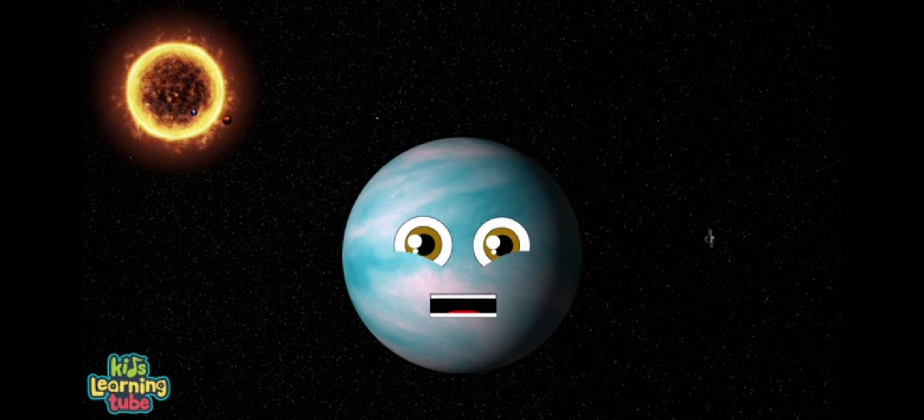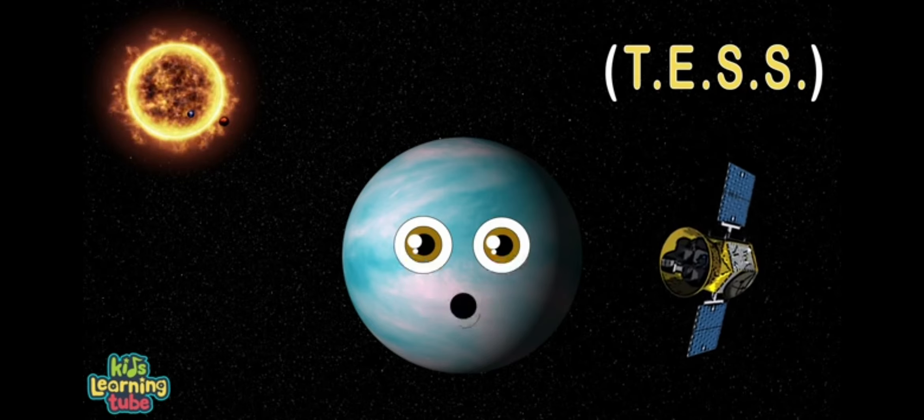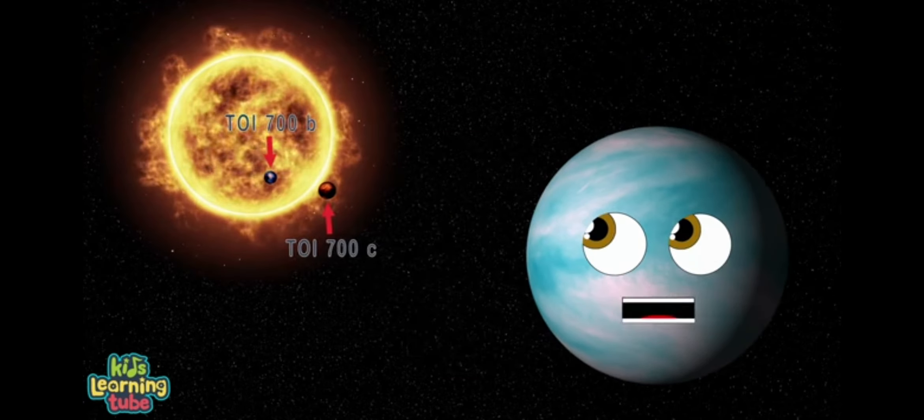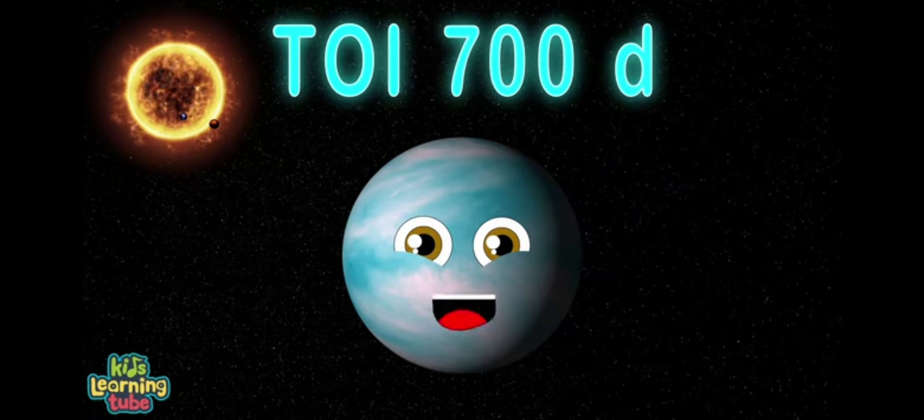I'm one of three exoplanets detected by TESS to be orbiting the host star TOI-700. We don't rest. Our names are TOI-700b and c, and TOI-700d. You guessed it. That is me.